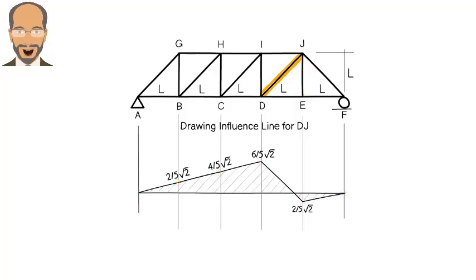We call this influence line for member DJ. Before we end the lecture, let's draw another influence line, say for member EJ.